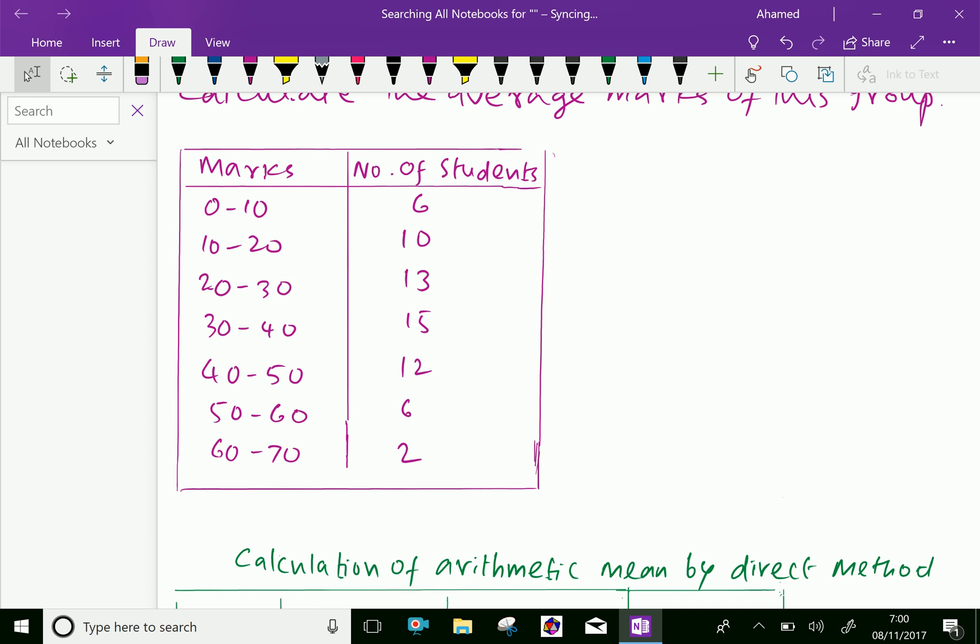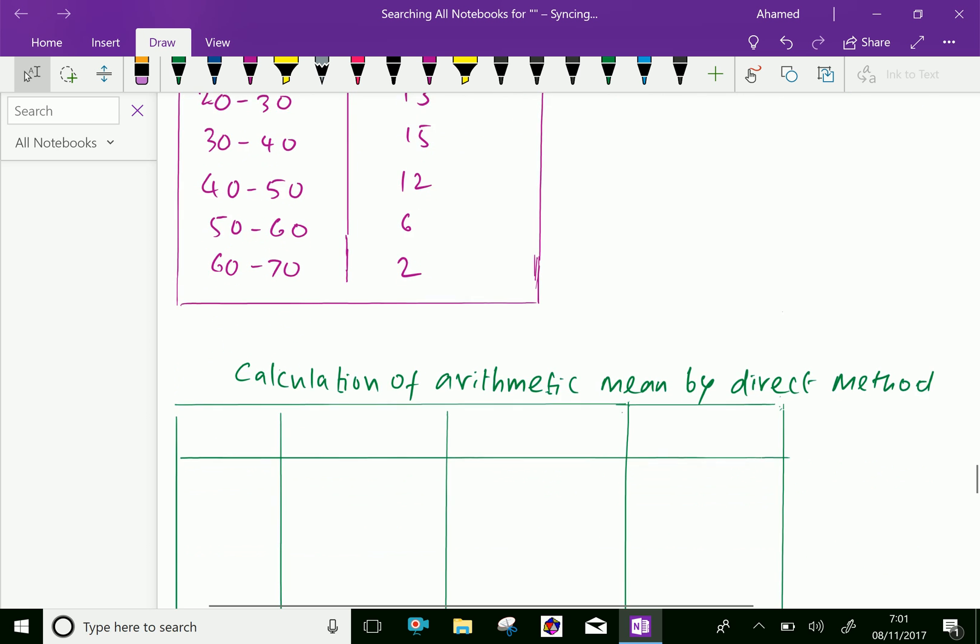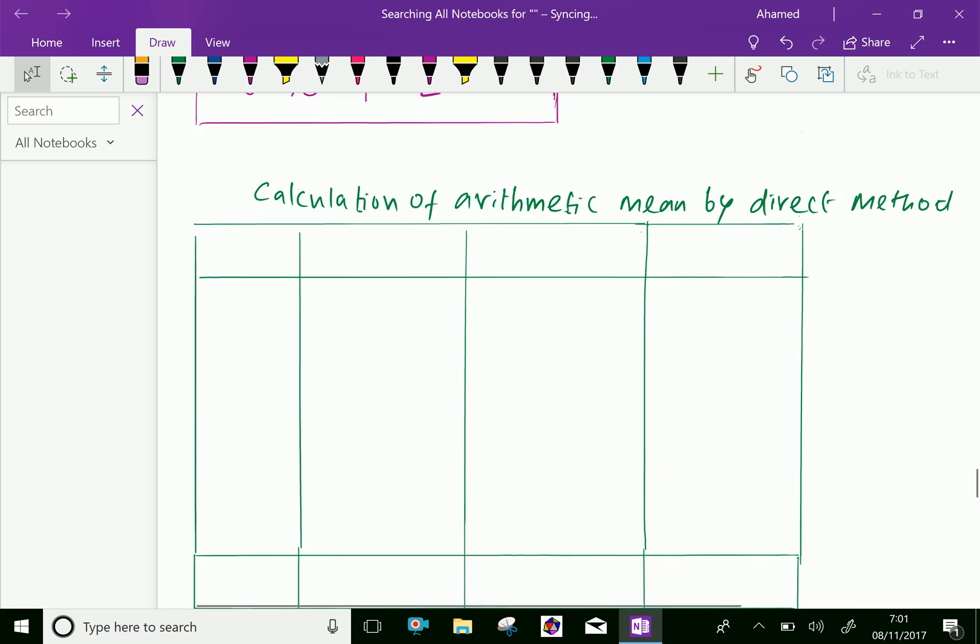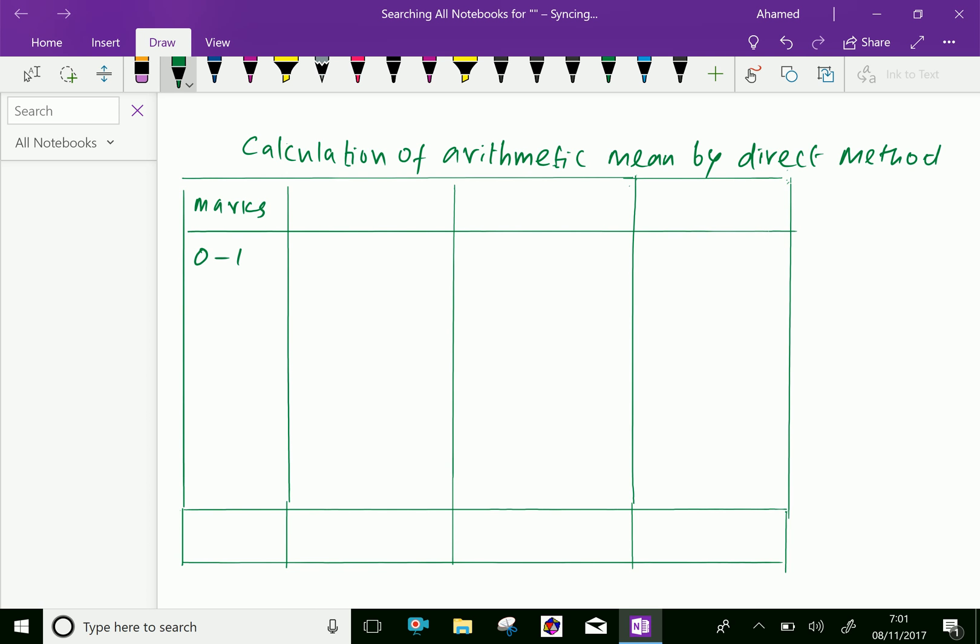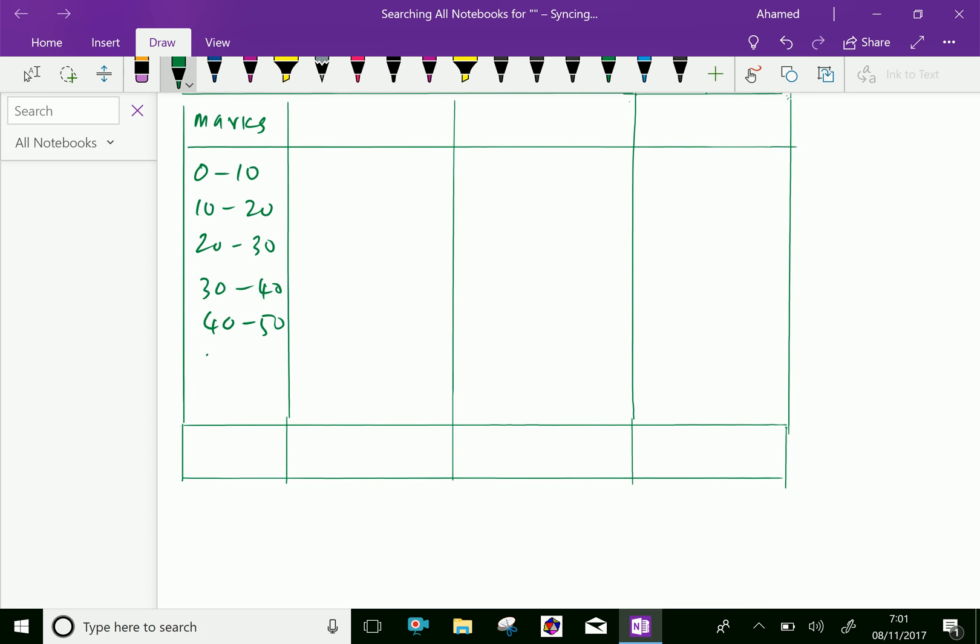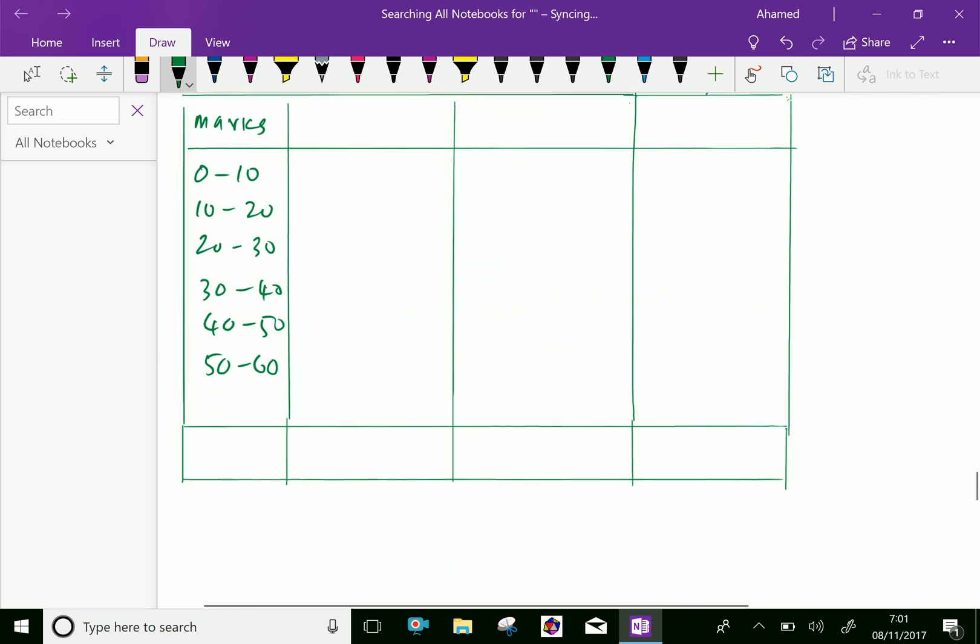Now, let us calculate arithmetic mean by using this table. First, write the marks here: 0 to 10, 10 to 20, 20 to 30, 30 to 40, 40 to 50, 50 to 60, and 60 to 70.